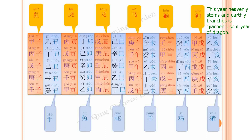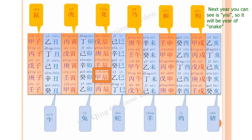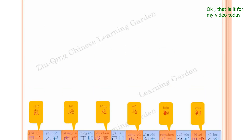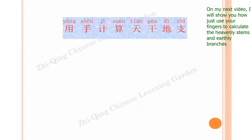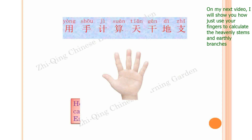This year's heavenly stem and earthly branch is jia chen, which means it's the year of the dragon. Next year will be yi si — the year of the snake. That's it for today's video. On my next video I will show you how to use your fingers to calculate heavenly stems and earthly branches. Hope to see you next time, bye!